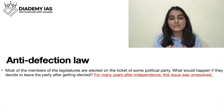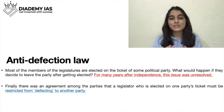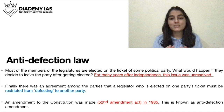For many years after independence, the issue of defection was unresolved. Finally there was an agreement among parties that a legislator elected on one party's ticket must be restricted from defecting to another party. To stop this, the anti-defection law was framed. The 52nd Amendment Act was made in 1985 — known as the anti-defection amendment — and it was subsequently modified by the 91st Amendment. The presiding officer of the house takes the final decision in all such cases.